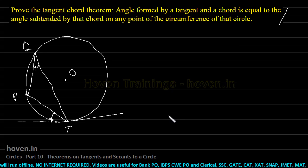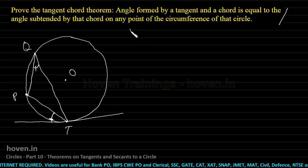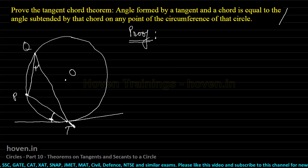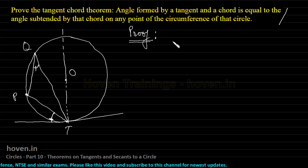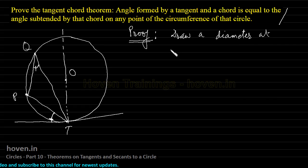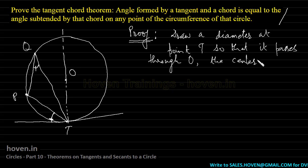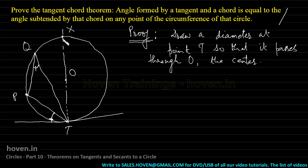Let us now prove this theorem so our concepts become very clear. The proof is quite interesting and requires knowledge of many things simultaneously, but it is not more than three steps. Step one is to draw a diameter at point T, passing through O, the center. Let us label the other end of this diameter as X.